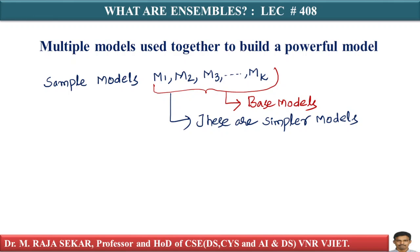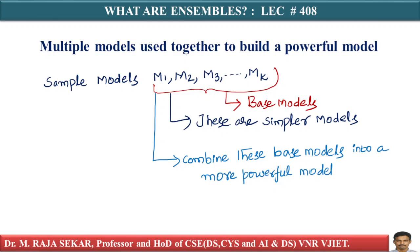By powerful, it means it could be more accurate. There are multiple instances of what 'powerful' basically means. But the core essence is: can you somehow leverage the good part of multiple models and combine them intuitively, combine them ingeniously, combine them very creatively to build a more powerful model — capital M — using the combination of all of these models M1, M2, and so on, Mk.